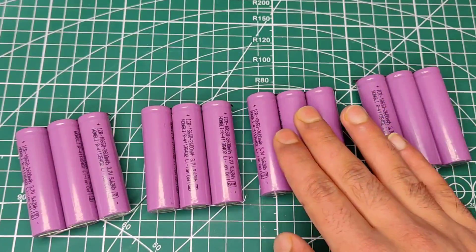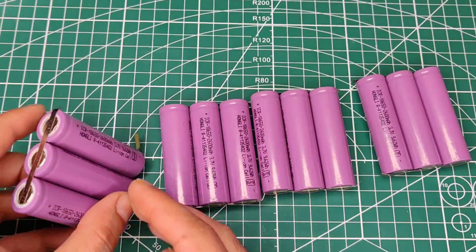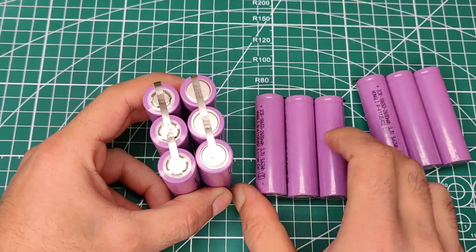Now I already made four parallels of 3.7 volt battery packs. To multiply its voltage, let's connect them in series.